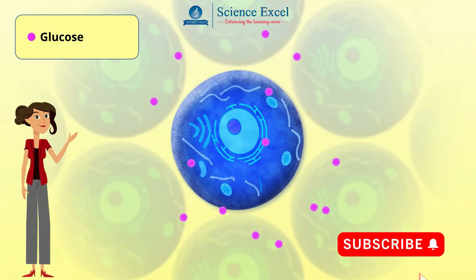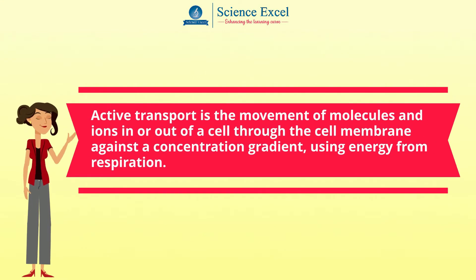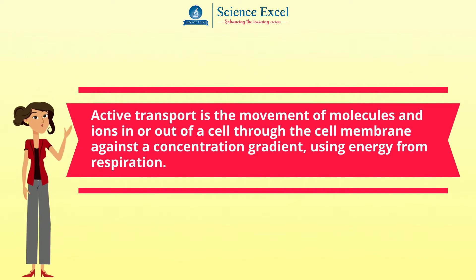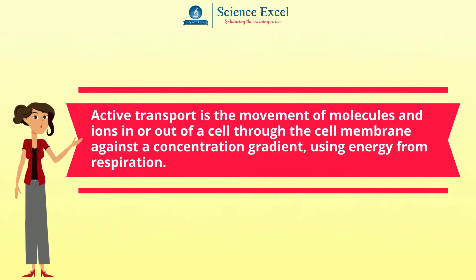Here the cell must bring in more glucose molecules, which they do by a process called active transport. Active transport is the movement of molecules and ions in or out of a cell through the cell membrane against a concentration gradient. And because it is not the natural direction, energy is required to make it work. This energy is obtained from respiration.